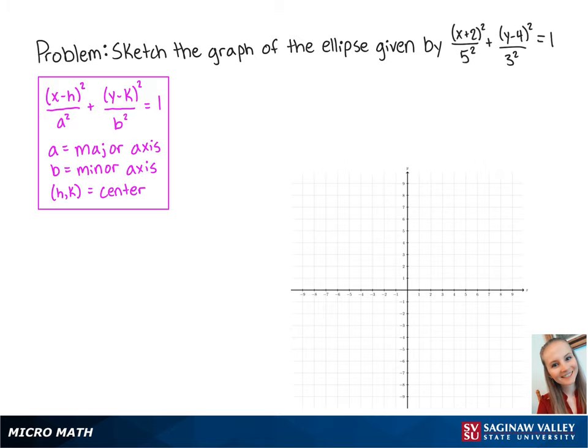Here we have the standard equation of an ellipse. a equals 5 and will be horizontal since it is underneath the x, b equals 3 and will be vertical since it is underneath the y, and the center is at (-2, 4).